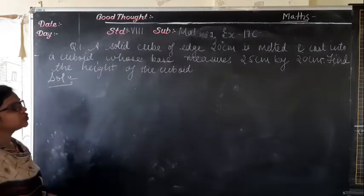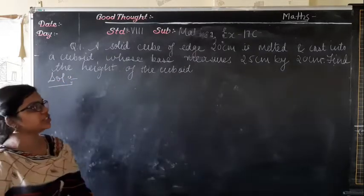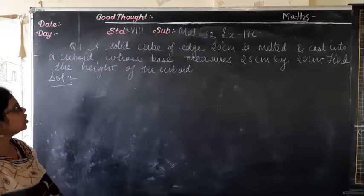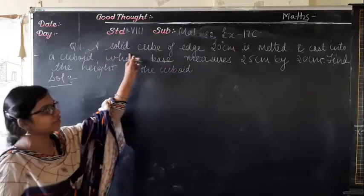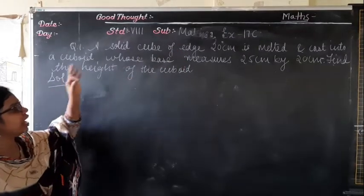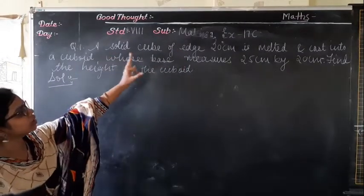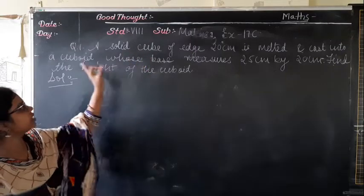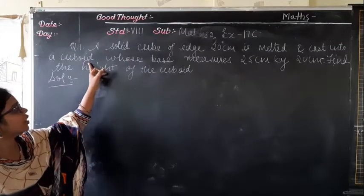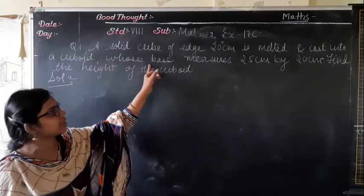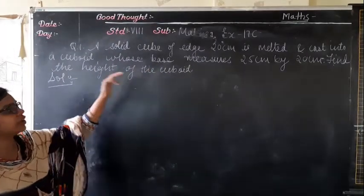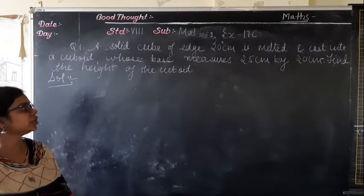In this question, a solid cube of edge 20 cm is melted and cast into a cuboid whose base dimensions are 25 cm and 20 cm. You have to find out the height of the cuboid.